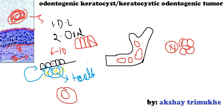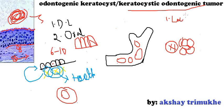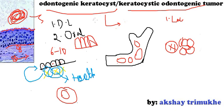Odontogenic Keratocyst has been renamed as Keratocystic Odontogenic Tumor by WHO because of its locally destructive behavior. First, it is locally aggressive and destructive. Second, because of the histopathology — the budding of cells into the connective tissue and its high recurrence rate. Third, the keratocyst is considered neoplastic in origin, though some investigators call it a neoplastic entity while others call it a developmental cyst.